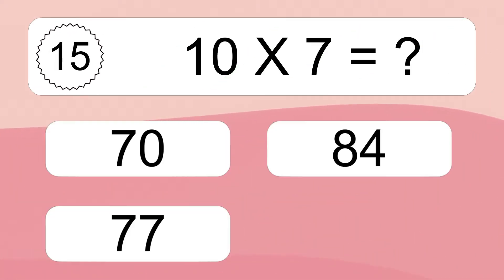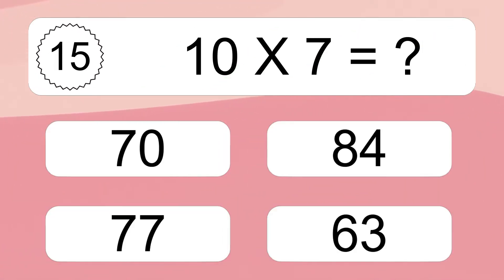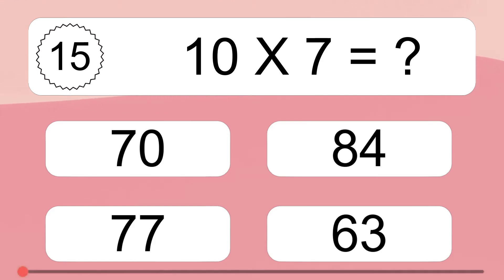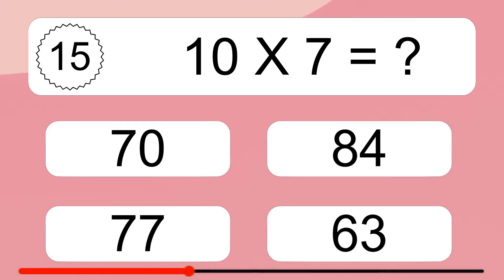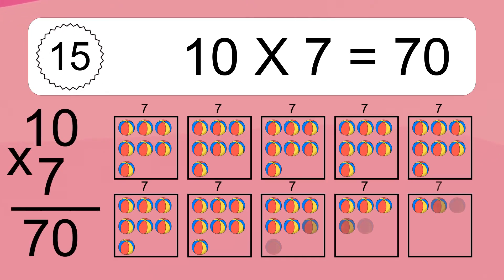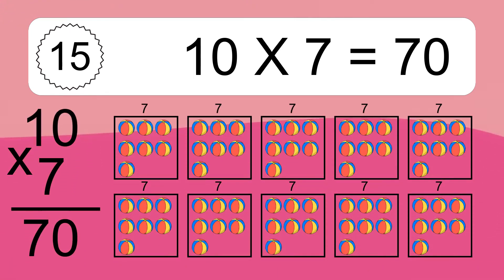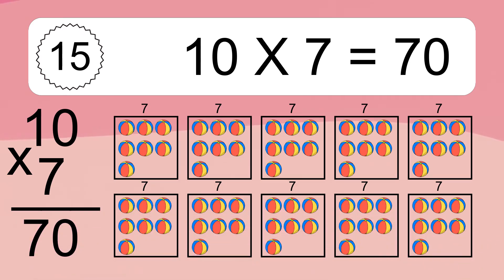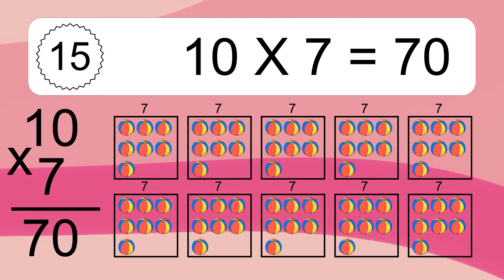10 times 7 equals what? 10 times 7 equals 70. We have 10 boxes, and each box has 7 colorful balls inside. If you count all the balls in all the boxes together, you will have 10 times 7 balls. This equals 70 balls.